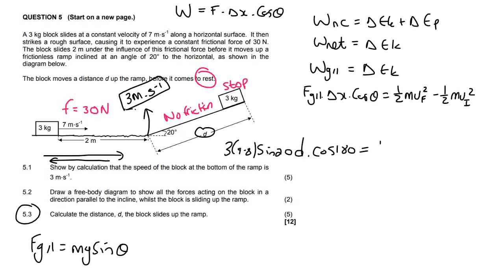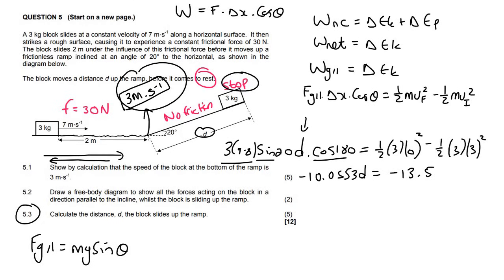The mass, the final velocity is 0 because they said that it's going to stop minus a half 3 times the initial velocity at the bottom of the slope is 3 meters per second. By the way, a lot of students forget these 2s, so just look out for that. And then what I did on the left here is I typed in these numbers on the calculator. It's going to become minus 10.0553 D. And then on the right hand side, if you type all of that in, that's going to become negative 13.5. You then divide 13.5 by the 10.0553, and what you would find is that D is going to be equal to 1.34 meters.